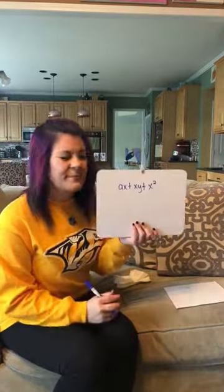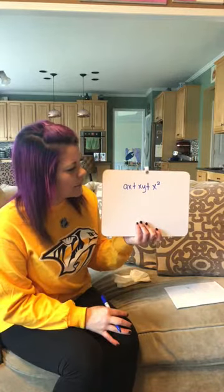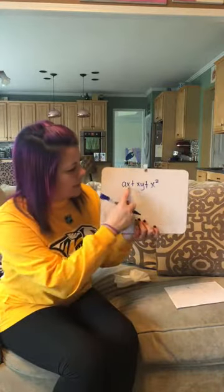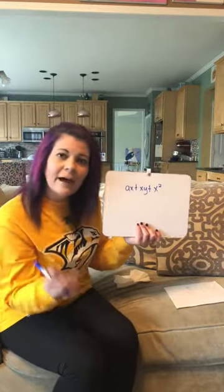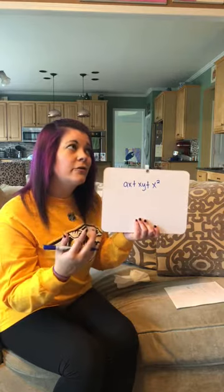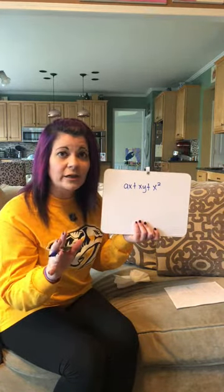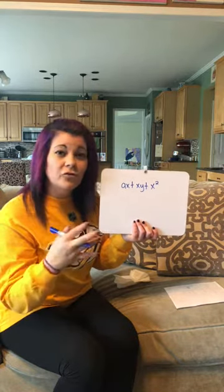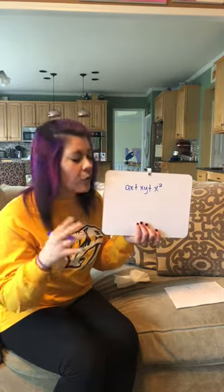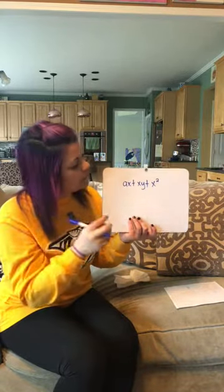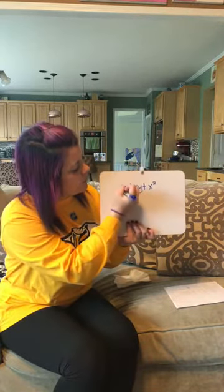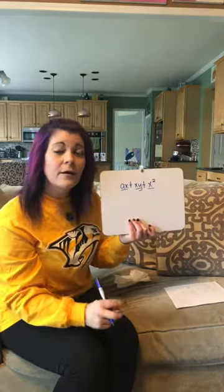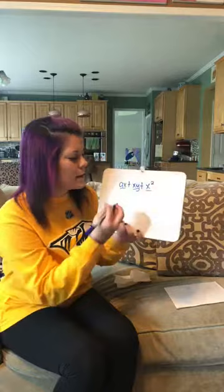So if we have something like ax plus xy plus x squared, first of all we can't factor that into two binomials because this term has an 'a' and nothing else does. The first thing you always want to do, even before factoring into two binomials, is check to see if the terms have a greatest common factor. In this case, what do all three terms — ax, xy, and x squared — have in common? They all have an x.